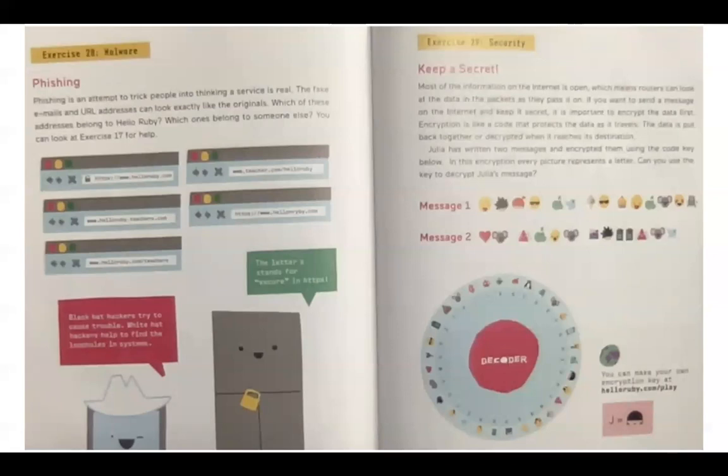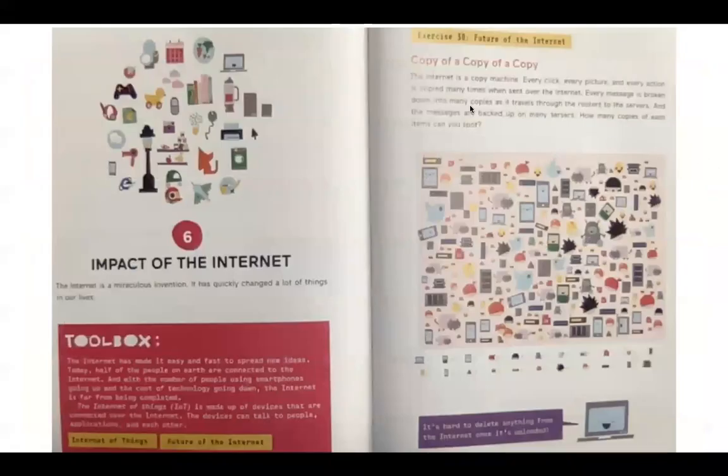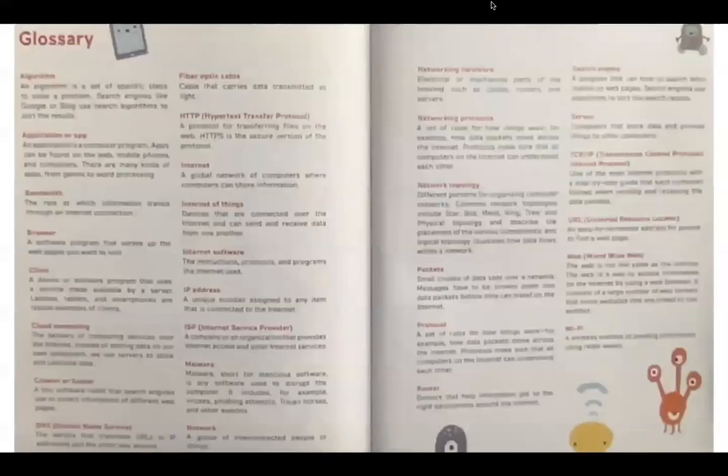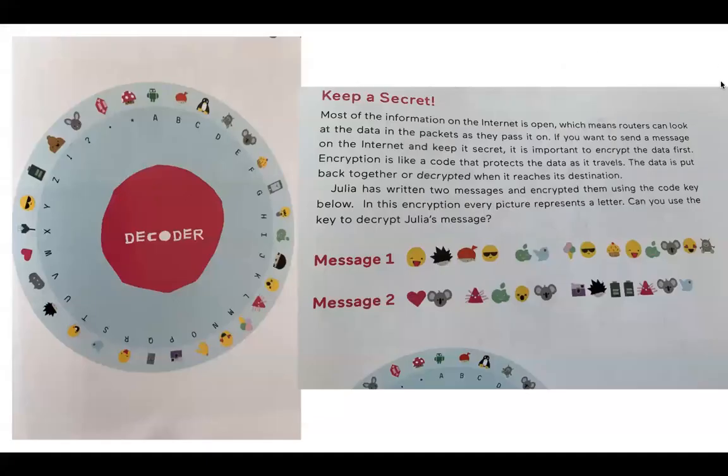Julia has written two messages and encrypted them using the code key below. In this encryption, every picture represents a letter. Can you use the key to decrypt Julia's message? I have blown up the decoder and the messages so you can figure it out. You can make your own encryption key at helloruby.com slash play.